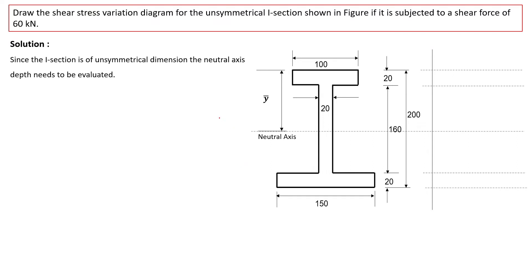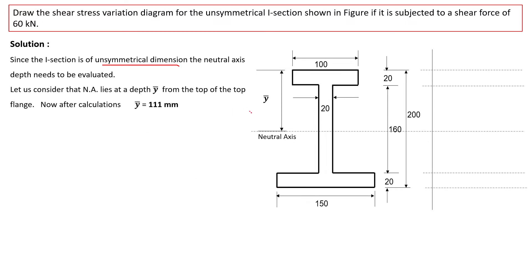When solving this type of unsymmetrical I-section numerical, we first need to find the neutral axis depth. Since it is an unsymmetrical section, the neutral axis will shift towards the major flange — the flange with higher width. Let us consider the neutral axis lies at a depth y-bar calculated from the top of the flange. After solving, the neutral axis depth comes out to be 111 mm from the top flange.